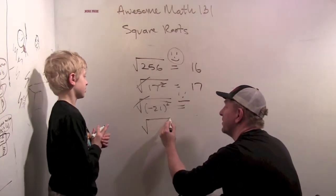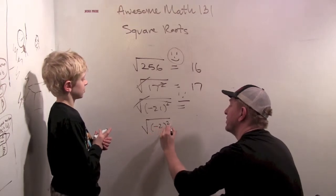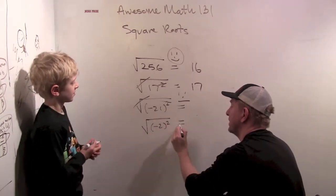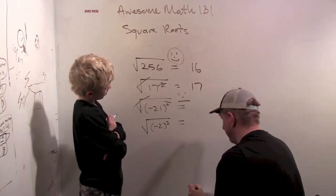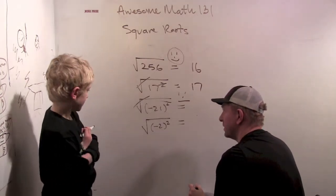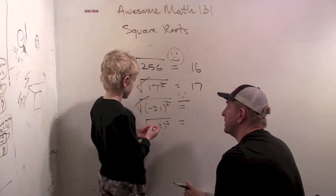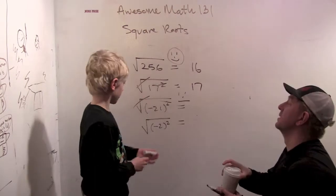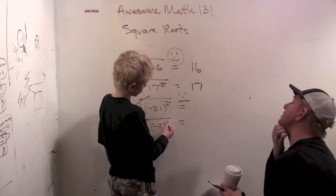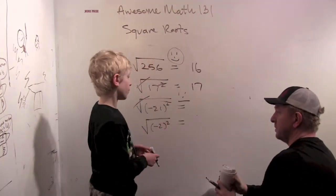How about the square root of minus 2 squared? Minus 2? Actually, I think you could make it positive because you square to get 4.